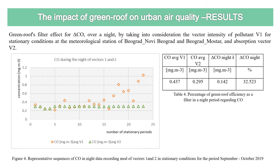The green roof filter effect for delta carbon monoxide overnight was also analyzed, taking into consideration the vector intensity V1 for stationary conditions at the meteorological station New Belgrade and MONSTAR, and the observation vector V2. Figure 4 shows a representative sequence of carbon monoxide in night data recording of the vector conditions for September and October, and on the right side you can see the percentage of green roof efficiency as a filter in the night period regarding carbon monoxide.